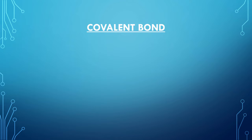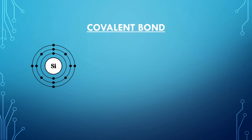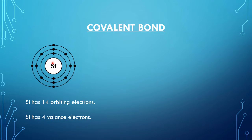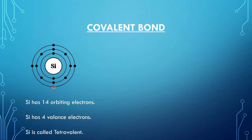Our first Bohr model structure is for silicon. For silicon, we see 14 orbiting electrons. Silicon has four valency electrons in the outermost shell, and so silicon is called tetravalent.